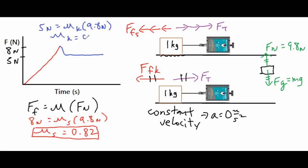The coefficient of kinetic friction comes out to 0.51. The coefficient of friction tells you how rough the surface is — technically it's a ratio between the horizontal friction force and the normal force, so it is typically a number less than one. You'll notice that the coefficient of static friction (0.82) is greater than the coefficient of kinetic friction (0.51), which is always expected on the same surface.